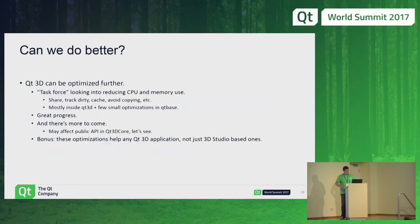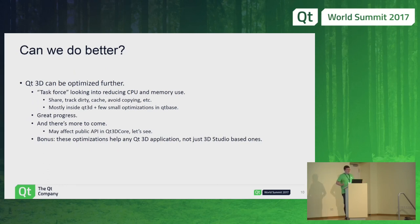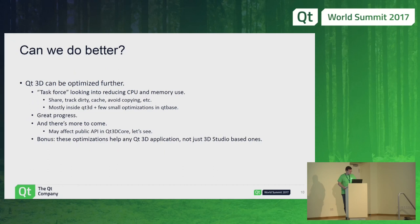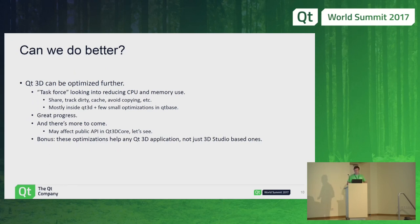Qt 3D can obviously be optimized further. Lars and a few other people actually started looking into whether we can reduce the CPU and memory usage of Qt 3D. The answer is yes — there are patches flowing into the 5.9 branch, so Qt 3D is getting a number of nice optimizations. This is good for everyone who uses Qt 3D, even if you don't care about 3D Studio. And as we speak, there are people in Oslo and elsewhere doing more patches.